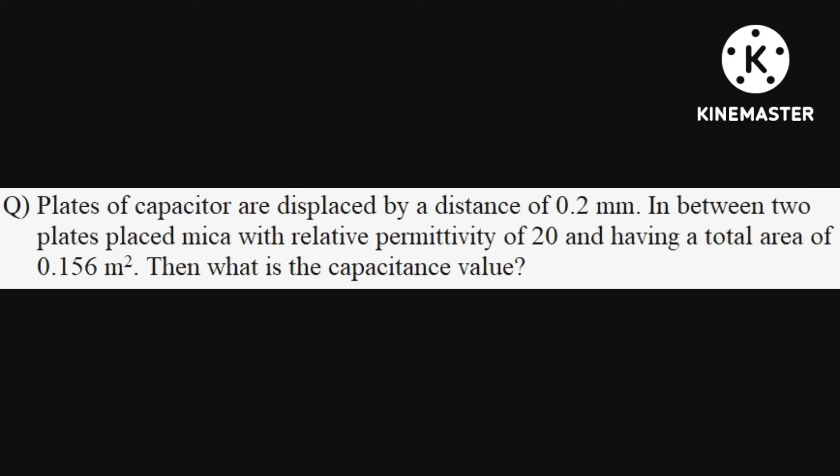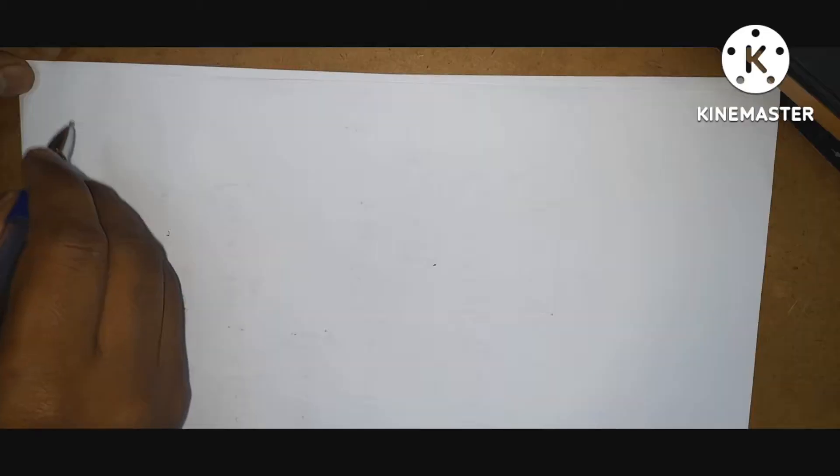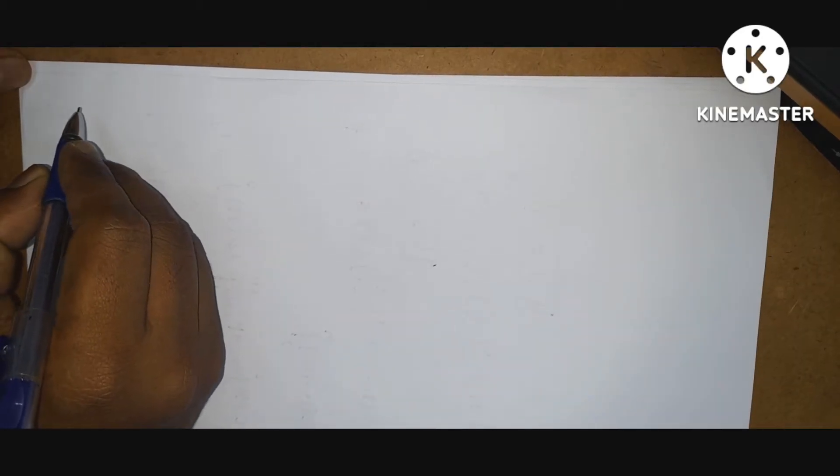Hello everyone. Now let us solve some problems on the capacitor. In the first question, plates of a capacitor are displaced by a distance of 0.2 mm. In between two plates, placed mica with relative permittivity of 20 and having a total area of 0.156 m². Then what is the value of capacitance? First, write down the given data.